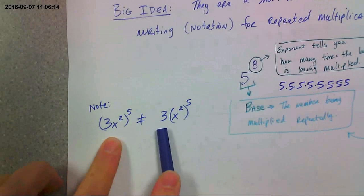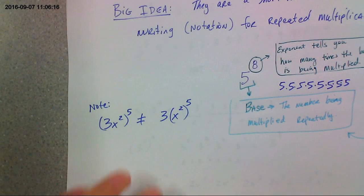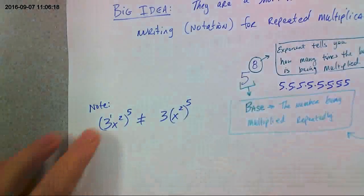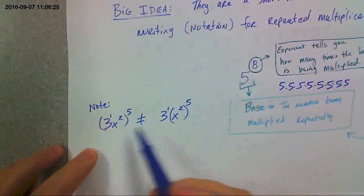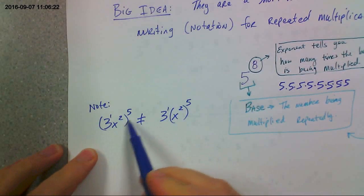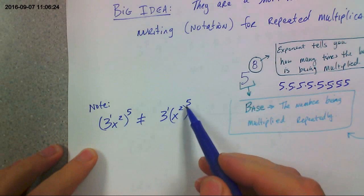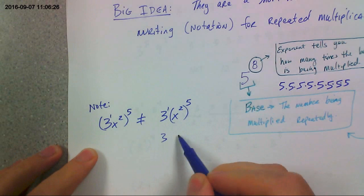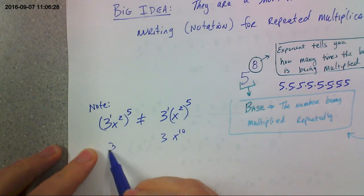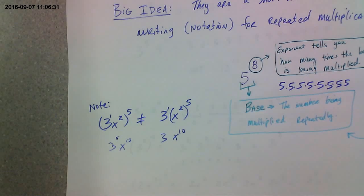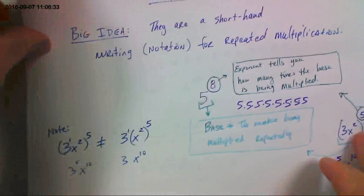All right. Now, note, these two things are totally different. Here, this has an exponent of 1, so does this 3 here. But this 3 is inside the parentheses, which means there's 5 of them. This one is on the outside. This is 3 times x to the 10th. And this would be 3 to the 5th x to the 10th. So a little different. You've got to be careful on how you read those.